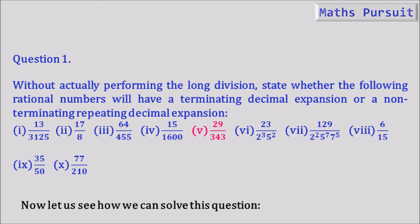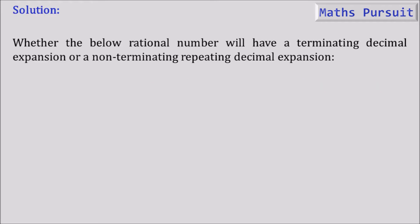Let's see how we can solve this question. The given question is whether the rational number 29 by 343 will have a terminating decimal expansion or a non-terminating repeating decimal expansion.